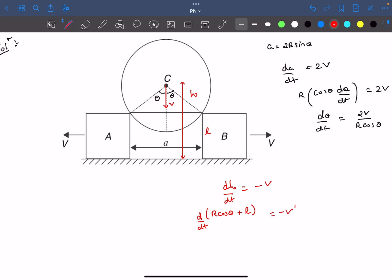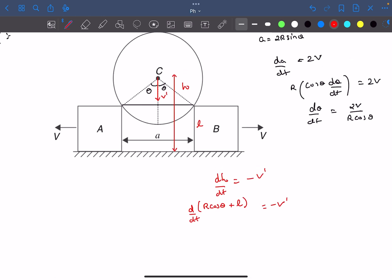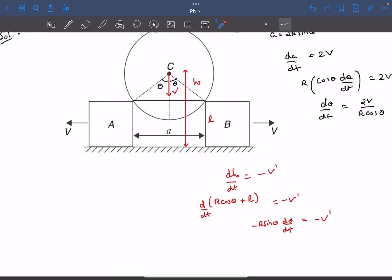This would be d by dt of R cos theta plus L, and this equals minus V. Let's take it as V dash because we already took V as the velocity of the block. Now if I differentiate, L is constant so dL by dt is 0, and d by dt of R cos theta is minus R sin theta times d theta by dt, which equals minus V dash. We can substitute the value of d theta by dt into this equation and get R sin theta times 2V divided by R cos theta equals V dash. From here we get V dash as 2V tan theta.